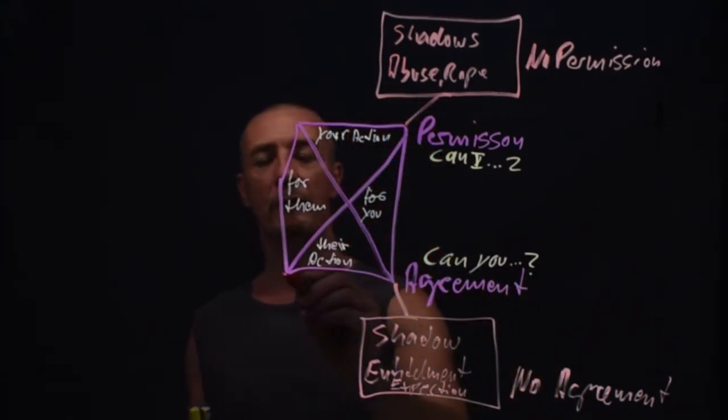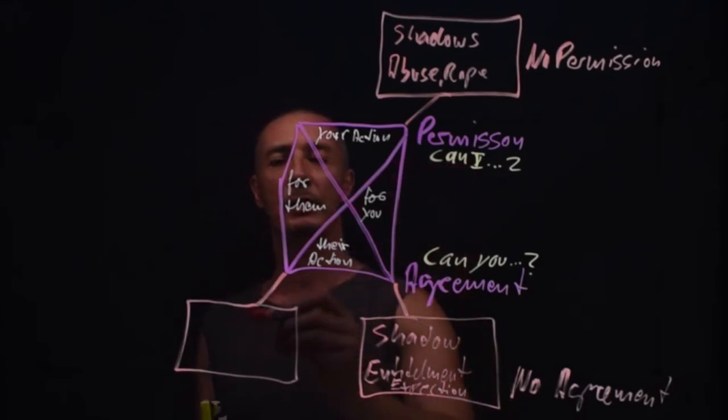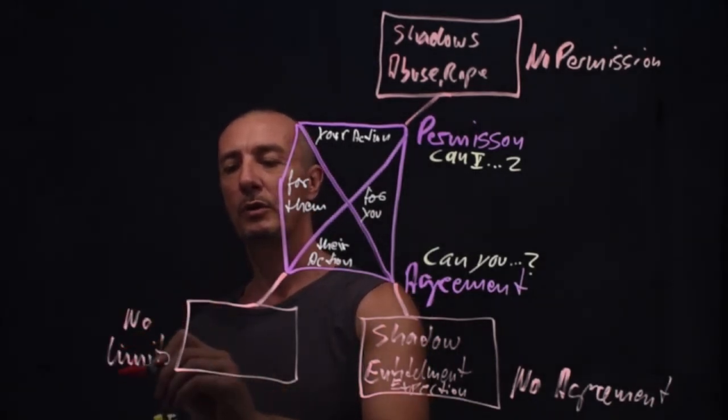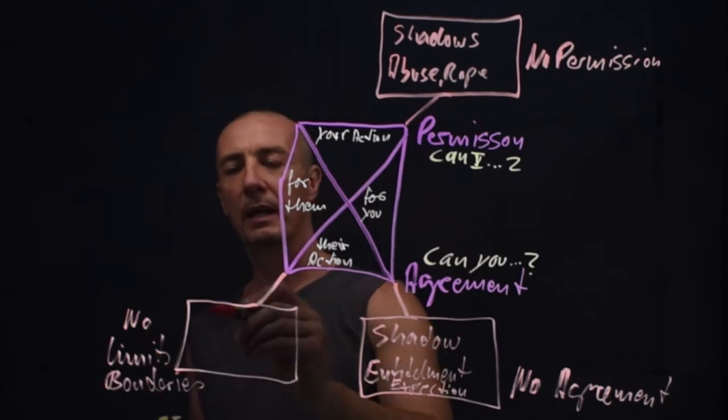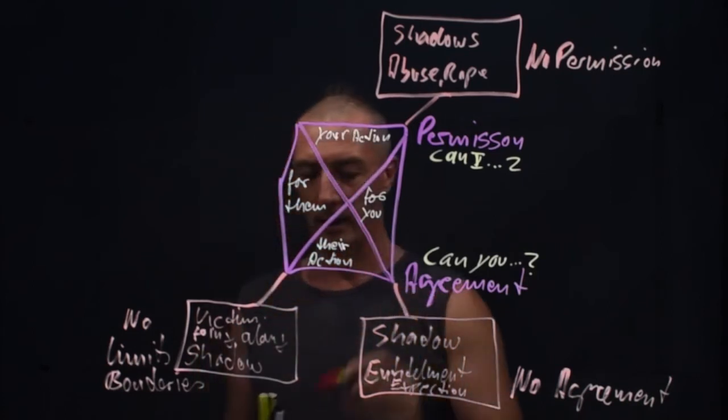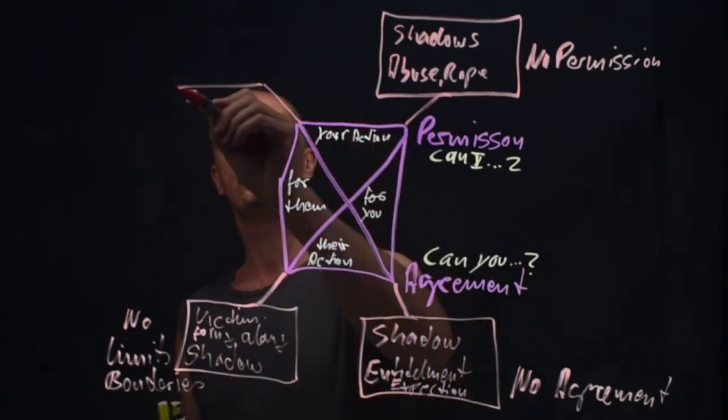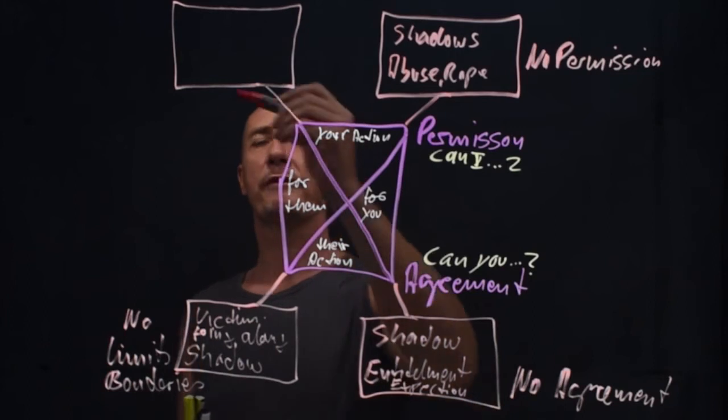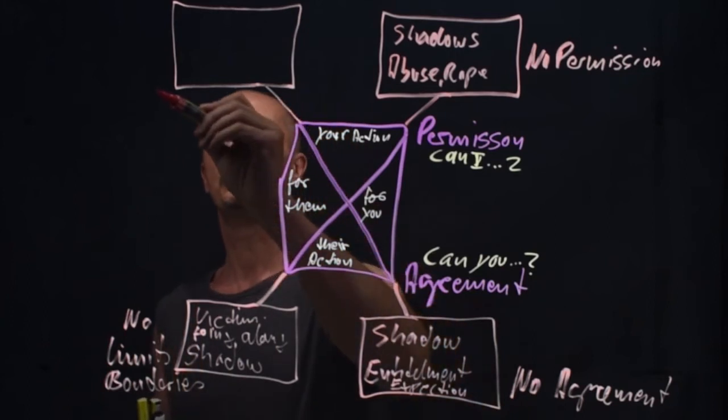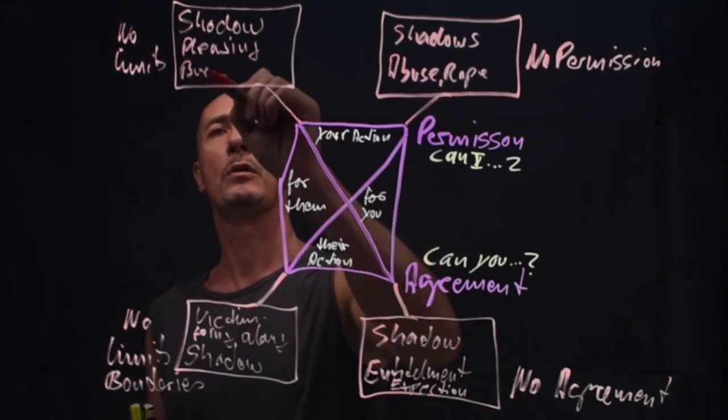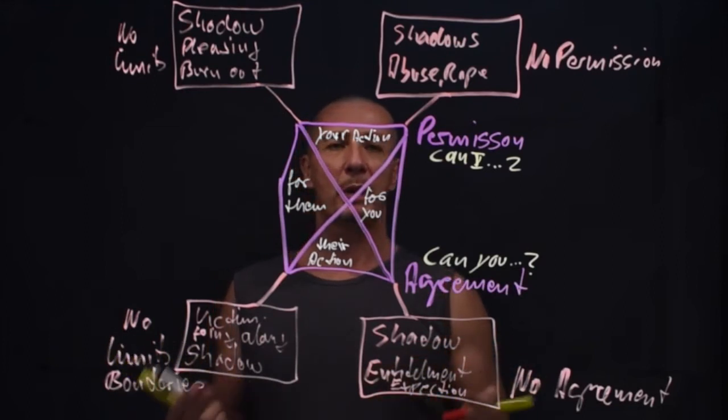And then you have the shadow here. If you don't give permission, but stuff is happening to you and you can't express your limits or you have no limits or no boundaries, the victim shadow going along. And then you have the shadow up here. If you're doing action for others and you don't have limits, so no limits here, shadow of pleasing or burnout.